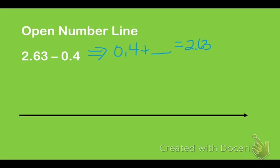The point here is I want to start at 0.4 and I want to jump on the number line until I end at 2.63. When using the number line, I want to make sure that I use friendly numbers — numbers that I can calculate very easily in my head. So I'm going to start my number line at 0.4. I know that I have to jump at least two whole numbers because I'm going from 0.4 to 2.63.